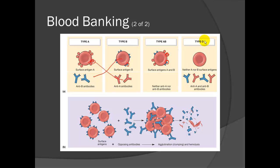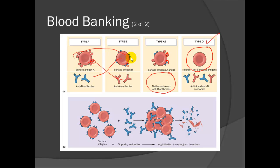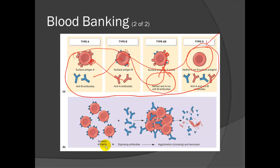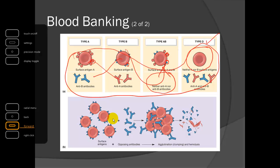Type O is the universal donor because it has no surface antigens to trigger an antigen-antibody reaction. It does not contain A, B, or any RH factor. O negative would be the absolute universal donor. Type AB is the universal recipient because it has no antibodies to react with anyone, so you could administer any blood type to this person, as long as the RH factors are matched.